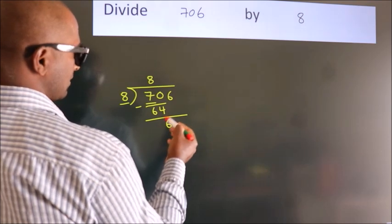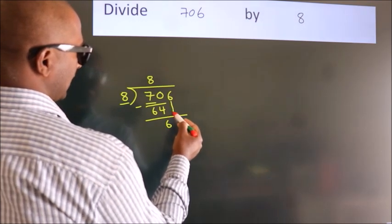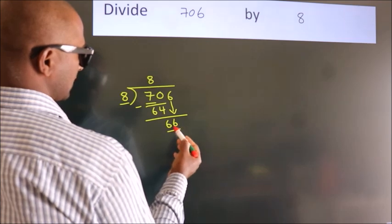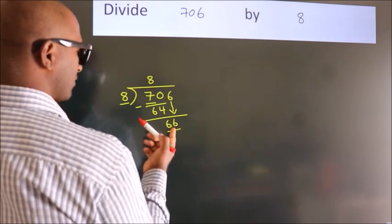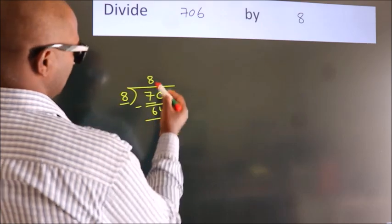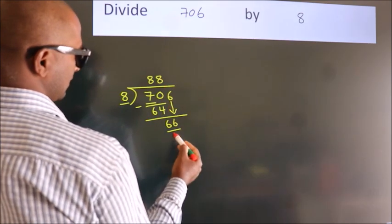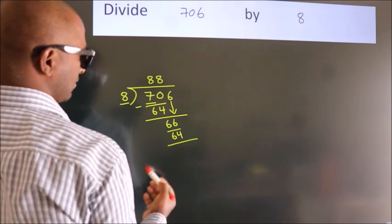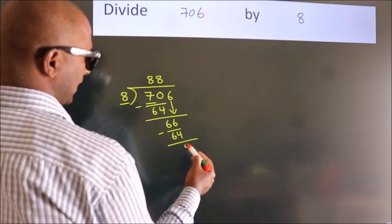After this, bring down the beside number. So, 6 down. So, 66. A number close to 66 in 8 table is 8 8 64. Now, we subtract. We get 2.